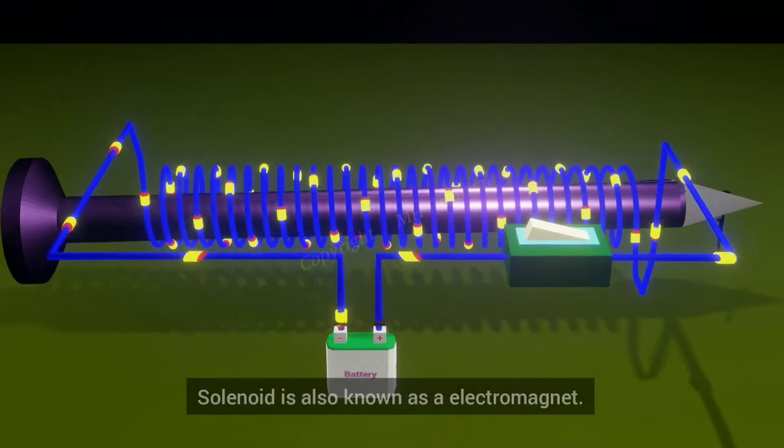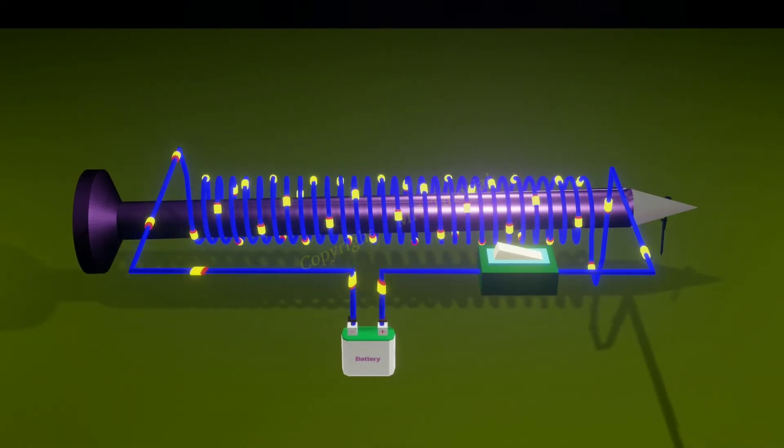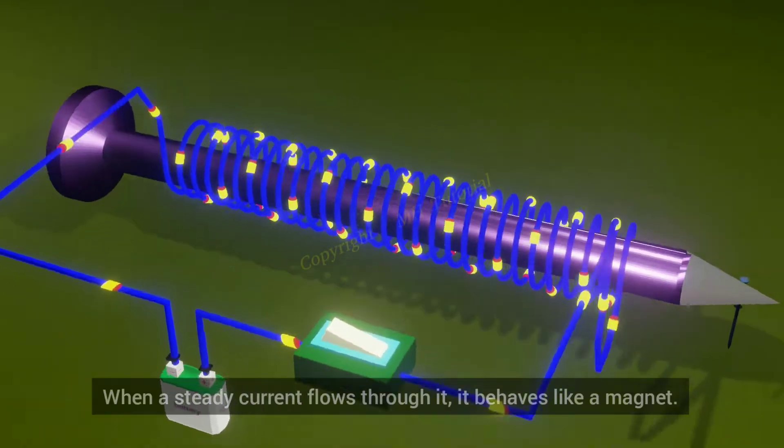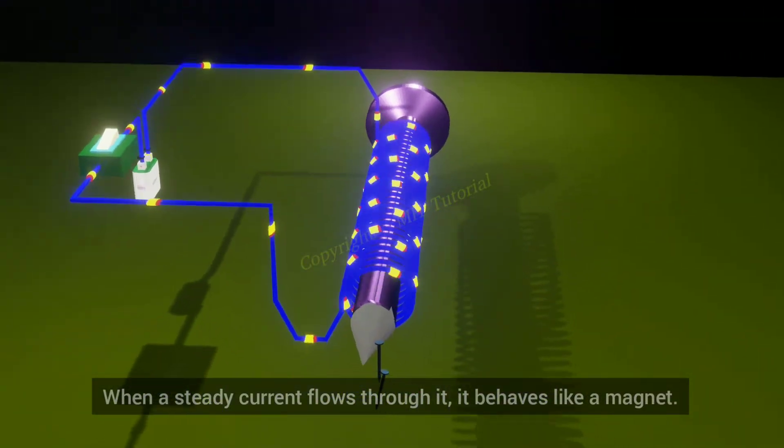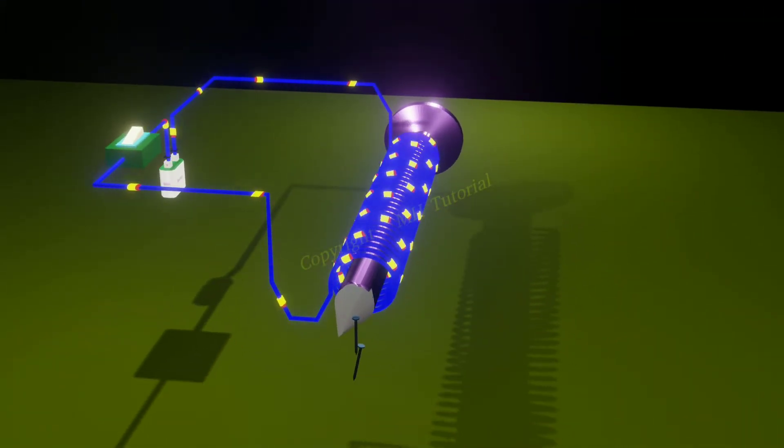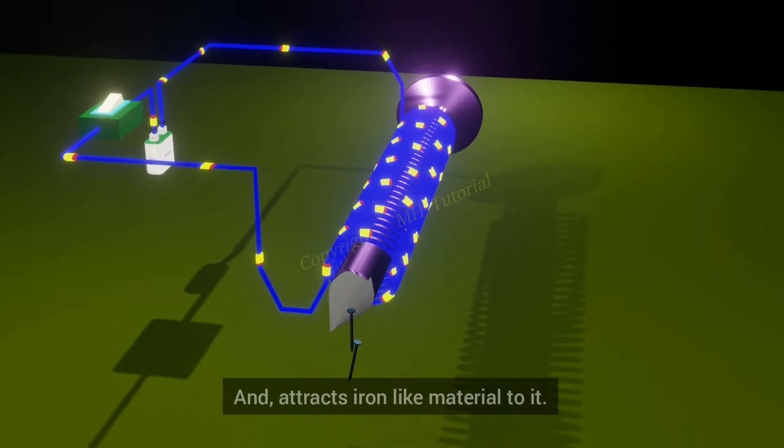Solenoid is also known as an electromagnet. When a steady current flows through it, it behaves like a magnet and attracts iron-like material to it.